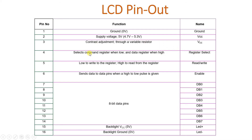RS (Register Select) selects the command register when low and the data register when high. RW (Read/Write) is kept low to write to the register — when interfacing with Arduino, keep this pin low always. Enable reads everything placed on the data lines and register select when a high-to-low pulse is given to it. DB0 to DB7 are the eight data lines for sending commands or printable data. LED+ and LED- are the backlight LED lines.